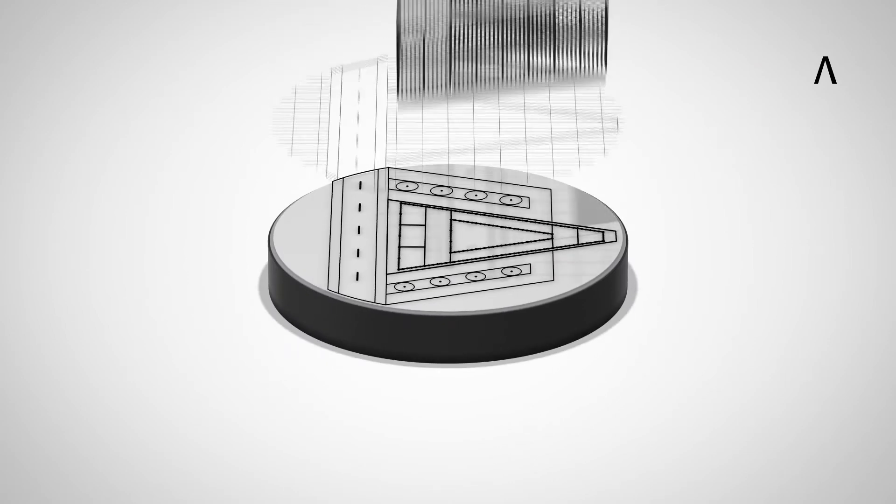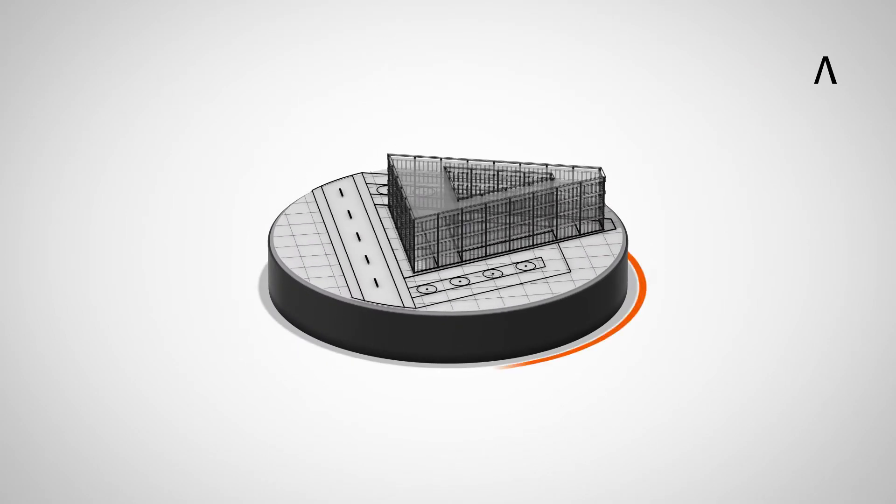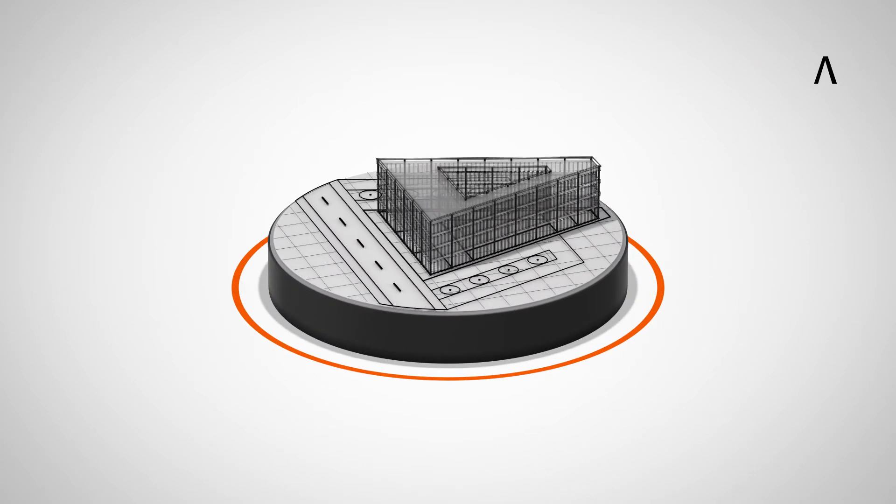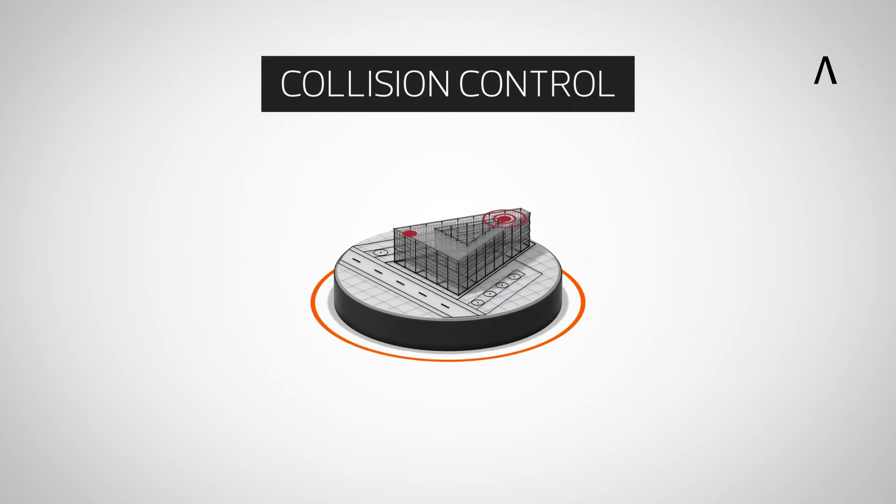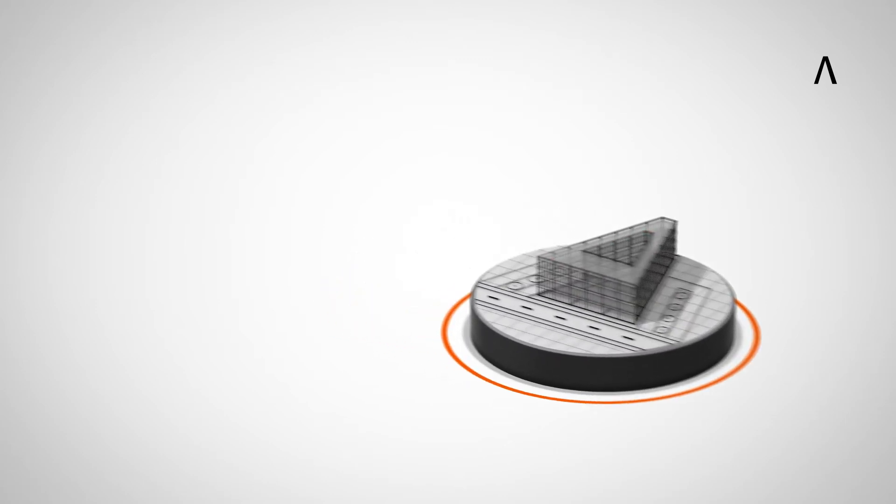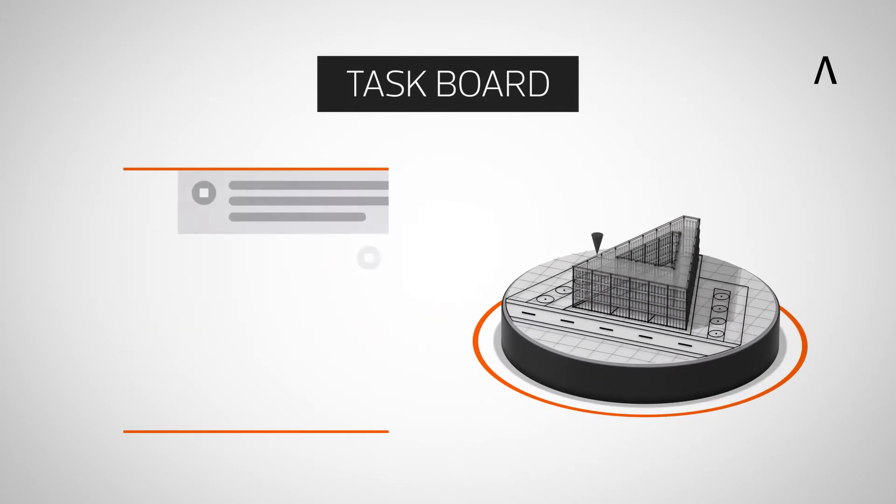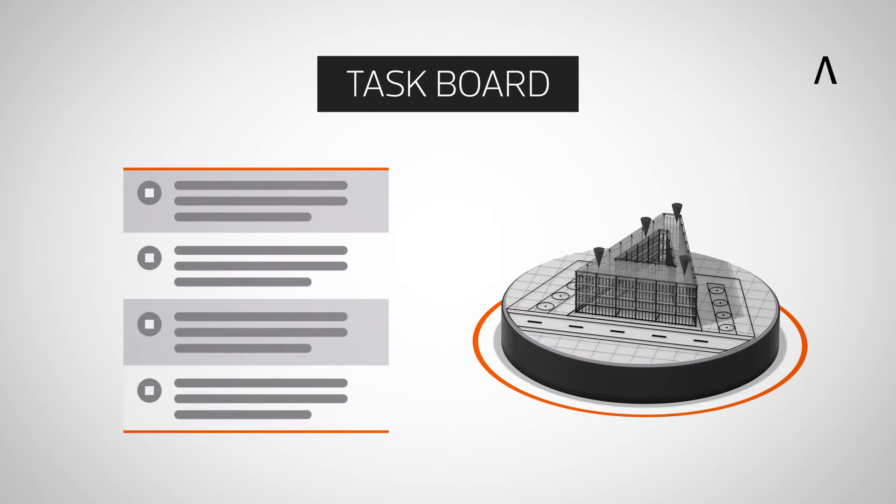This central coordination model forms the basis for interdisciplinary cooperation. All information is combined and with the collision control function discrepancies can be immediately identified. In addition, the task board function can be used to efficiently coordinate tasks across all project stakeholders.